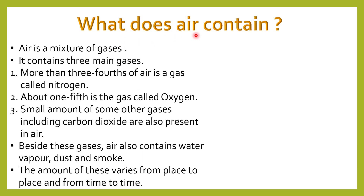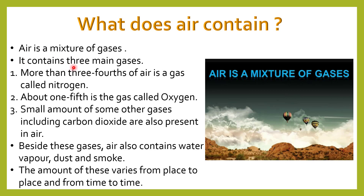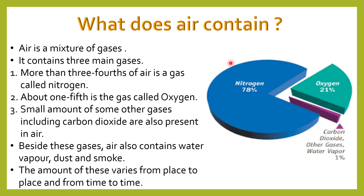Now let's discuss about what does air contain. Air is a mixture of gases. It contains three main gases. More than three-fourths of air is a gas called nitrogen, about one-fifth of the gas present in air is called oxygen, and very small amounts of other gases including carbon dioxide are also present. Besides these gases, air also contains water vapour, dust and smoke. The amount of these varies from place to place and from time to time.